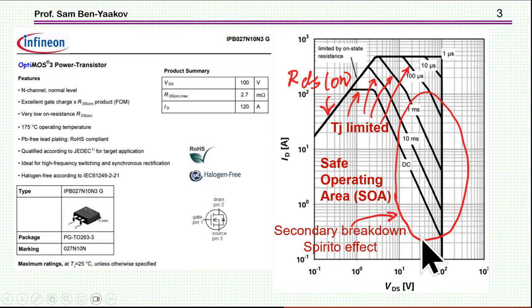Now, this region is the so-called secondary breakdown of Spirit. Spirit is the name of a person. He wrote a paper on this phenomenon. And what it is is that if you have a transistor operating in the linear mode, you might have a secondary breakdown due to crowding of current within the surface of the MOSFET. That is, the current is concentrated in a certain region, which gets very hot, and then there could be a breakdown.